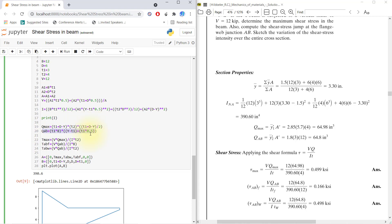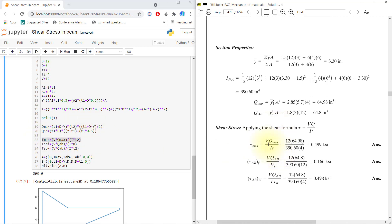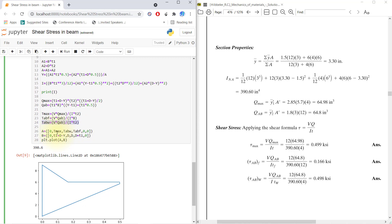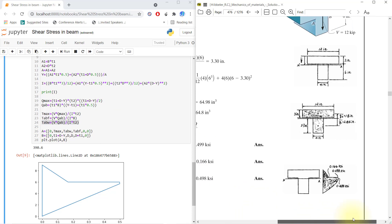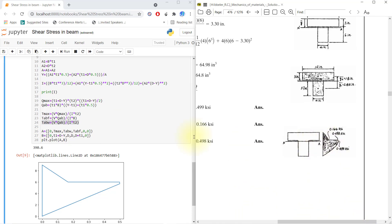Now Q_max, same thing. Q_ab, same thing. τ_max is VQ/(It), but t2 is 4 inch. At the flange, our b value is 12 as you can see, and τ at web, so again t2. The main concern about this is how to plot that graph.